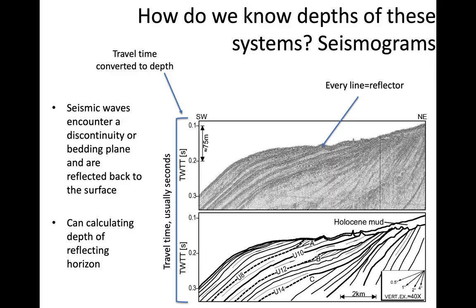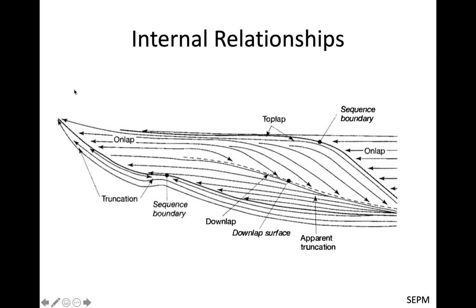How do we know the depths of all the systems? Seismograms. Seismic waves are sent out, and every line on the seismogram is a reflector showing some kind of difference — typically in density. The time it takes can be converted to depth, telling us a lot about different boundaries and reflectors inside the Earth. That's how we create images of internal relationships, see unconformities that are sequence boundaries, and see different surfaces. Top lap, on lap, and similar terms describe the angle at which different beds are meeting these sequence boundaries.